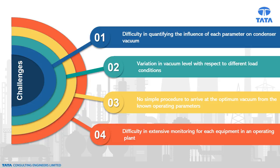There is also difficulty in extensive monitoring for each equipment in an operating plant. Due to these complexities, it's difficult for an operator to decide whether the condenser vacuum is maintained at its optimum value with varying power generation. During a flexible operation scenario, this would severely impact plant efficiency.